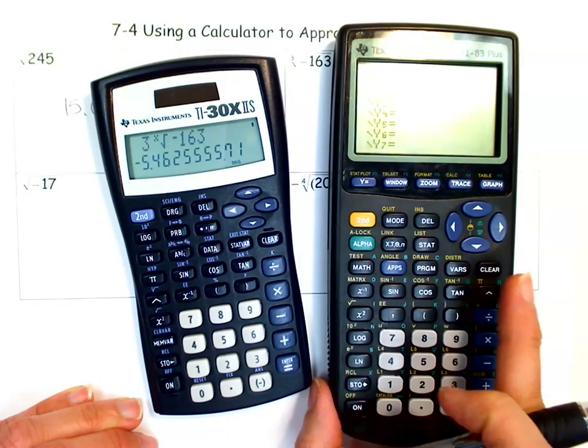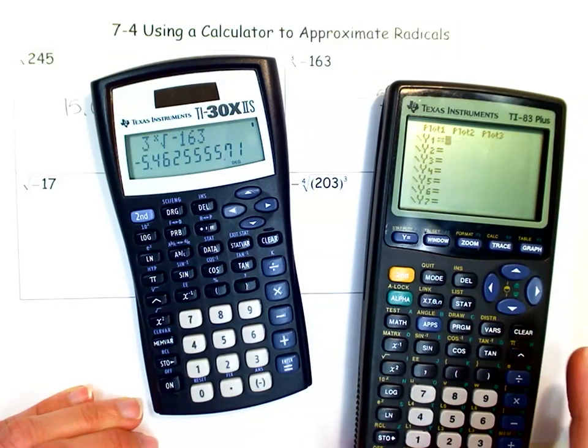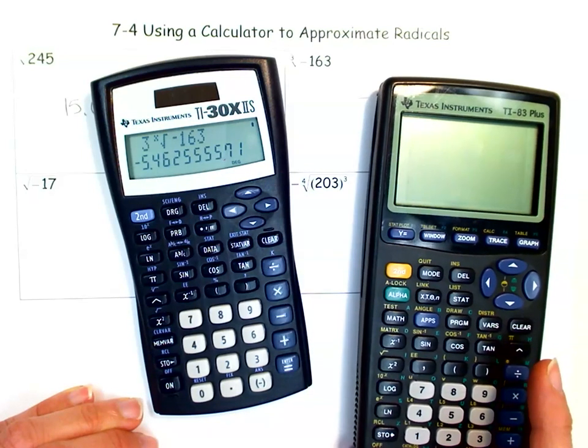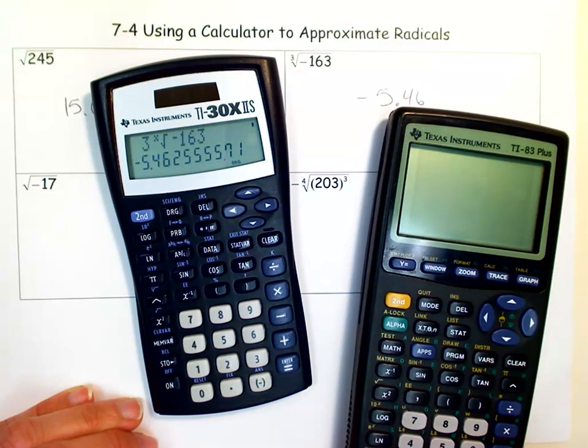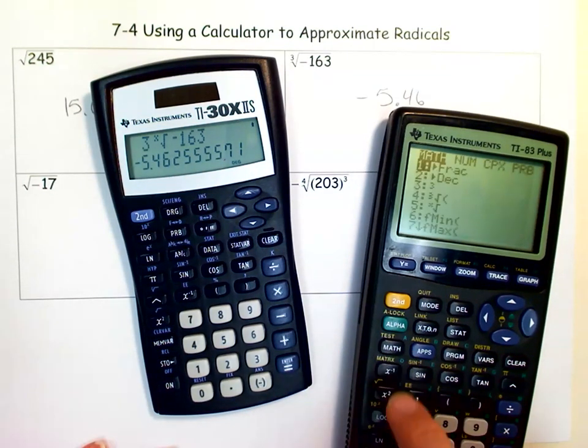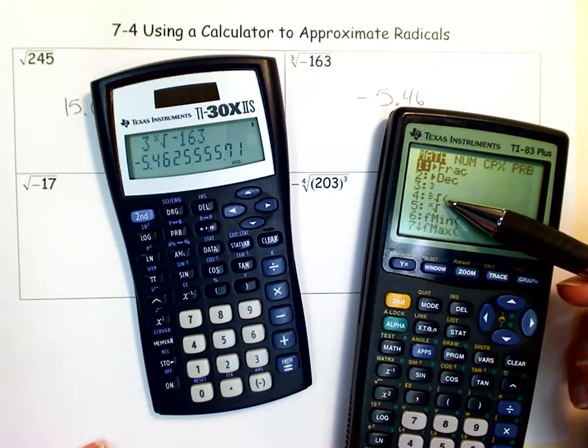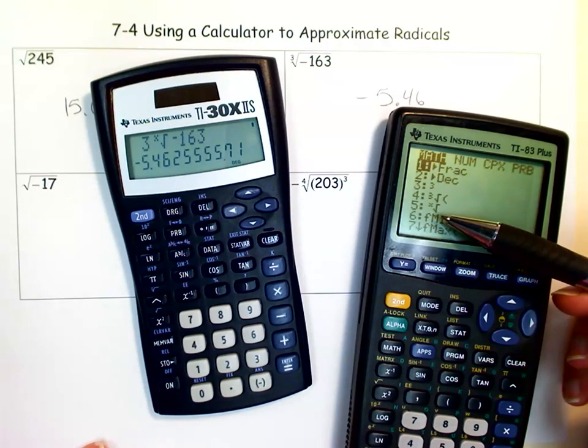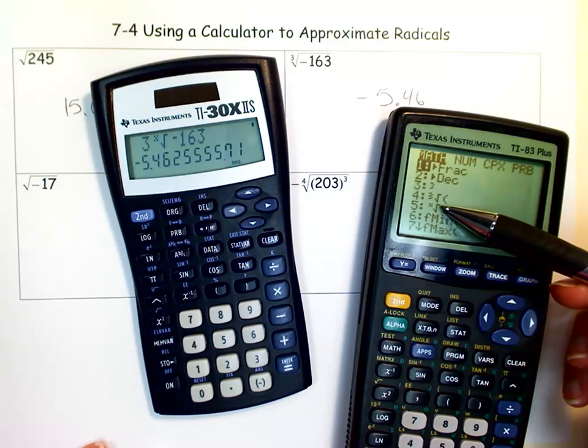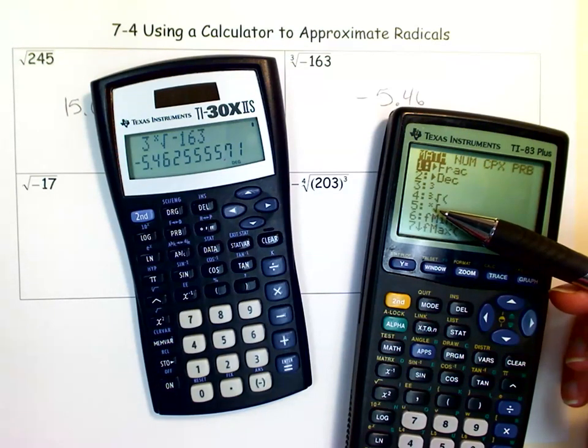If you're using a graphing calculator, let's get rid of that first. Under the math menu, if you hit math, you see the cube root sign. And you also see the x to the x-th root option.